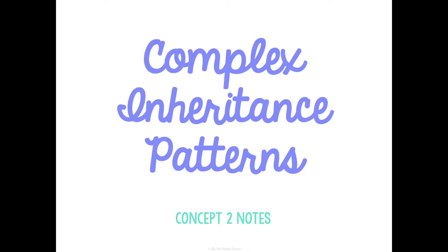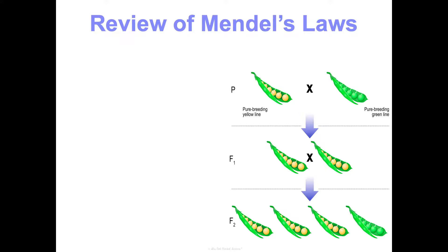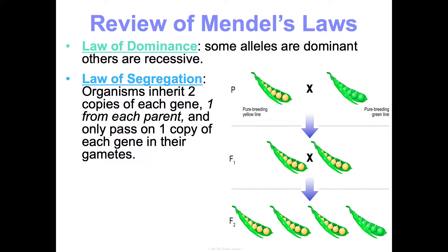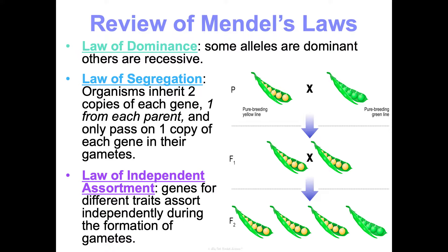This is Unit 5 Heredity Concept 2 Notes — we're going to talk about complex inheritance patterns. In Concept 1 we talked about Mendelian genetics and Mendel's three laws: the law of dominance, which says some alleles are dominant and others are recessive; the law of segregation, which says organisms get two copies of each gene, one from each parent, and pass on only one copy in their gametes; and the law of independent assortment, where genes for different traits assort independently during gamete formation.